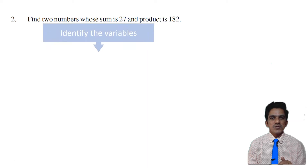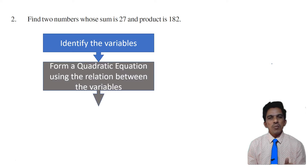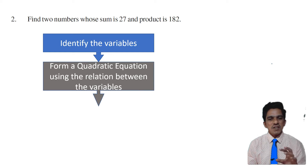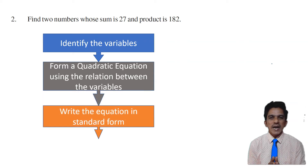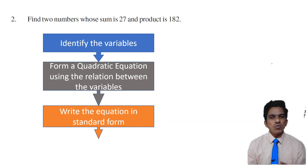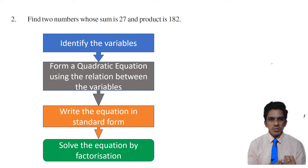To solve these kinds of word problems, we follow a four-step procedure. In the first step, you have to identify what are the variables in the problem. Then you have to form a quadratic equation using the relation between the variables. In the third step, you have to write that quadratic equation in standard form. Then after writing the equation in standard form, we have to solve the equation by factorization.